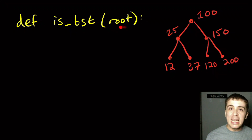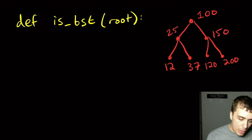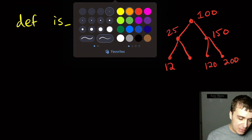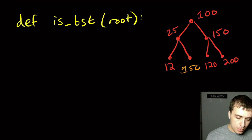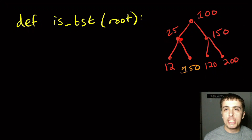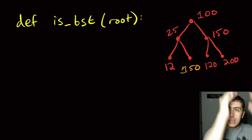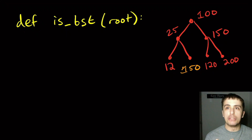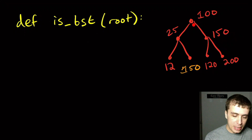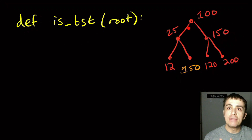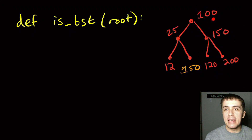If it's an empty tree then clearly this is a binary search tree — there's nothing that can violate the BST invariant. Now, if the tree is not empty, think about that weird example where we replaced 37 with 150. That 150 was okay with respect to 25 but not okay with respect to the grandparent node. So we need to filter down the limits of where values can be. If we're at the 100 node and look down the left side, the maximum anything can be is 100; on the right side, the minimum is 100.